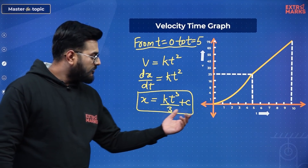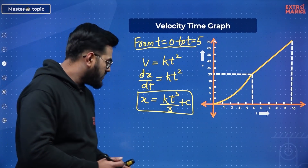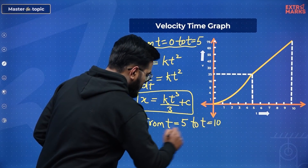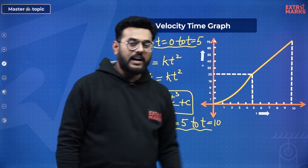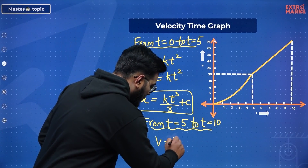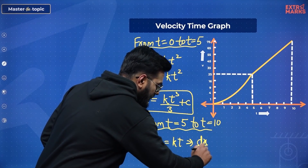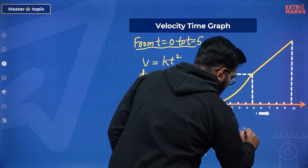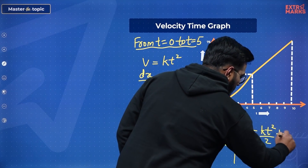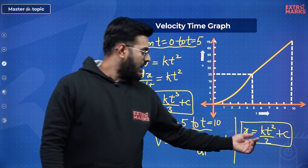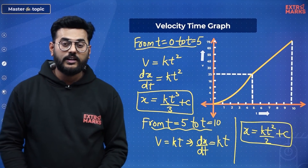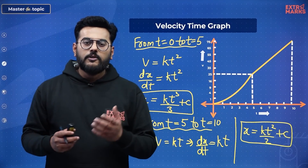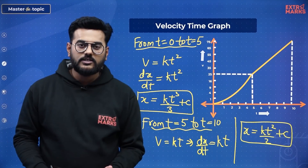For T = 5 to T = 10 seconds, velocity had a linear relation with time — V = kT. Replacing V with dx/dt and integrating, I get X = kT²/2 + C. This follows the pattern X² = 4AY, which is a parabolic curve. So in this manner I can determine the nature of the position-time curve for both sections, and finally draw the XT curve.